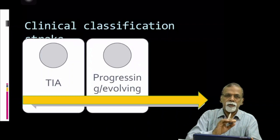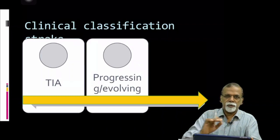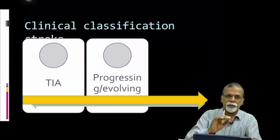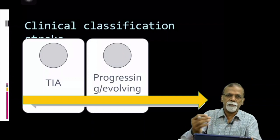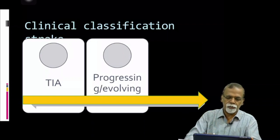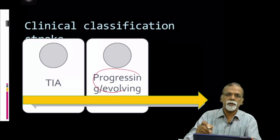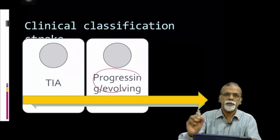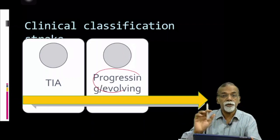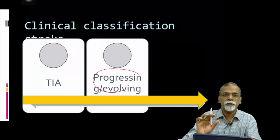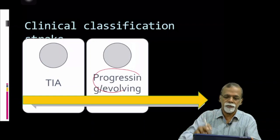Sometimes a stroke may be progressing. A patient may come with minimal weakness on one side, which may progress — such a stroke is called a progressing stroke or stroke in evolution. That is, the stroke is going to evolve; that is called stroke in evolution.